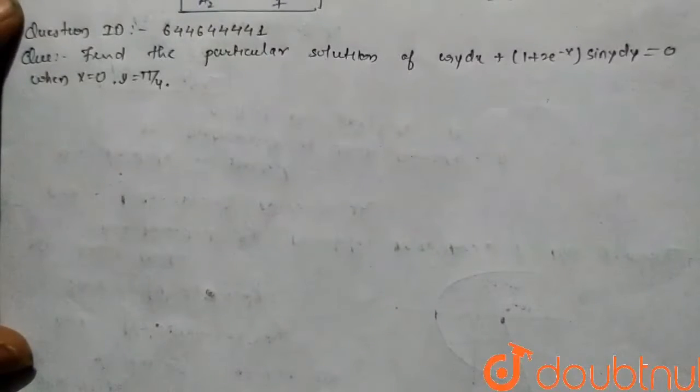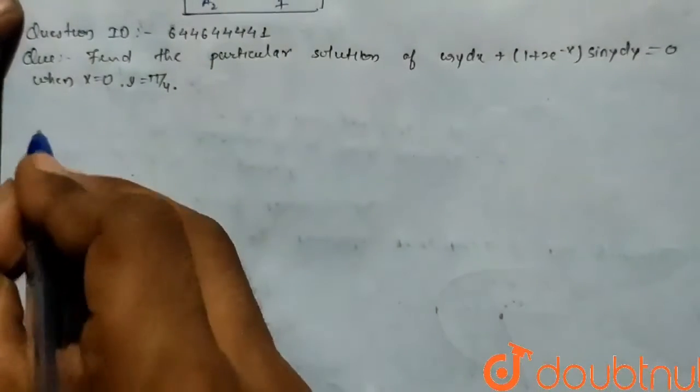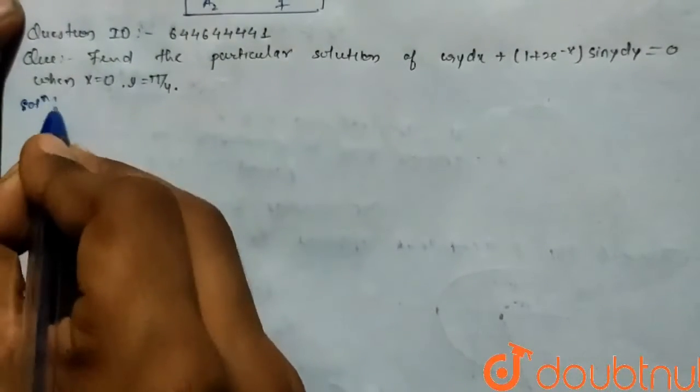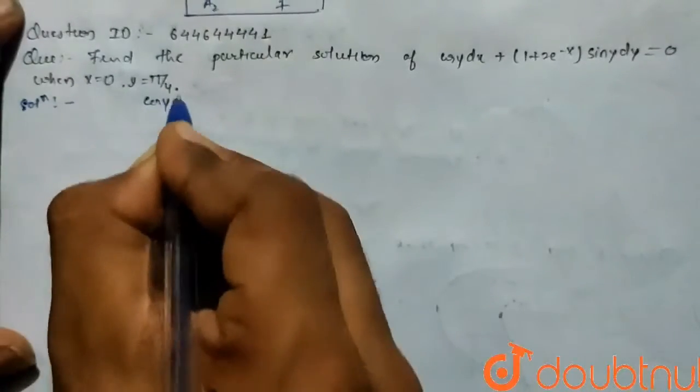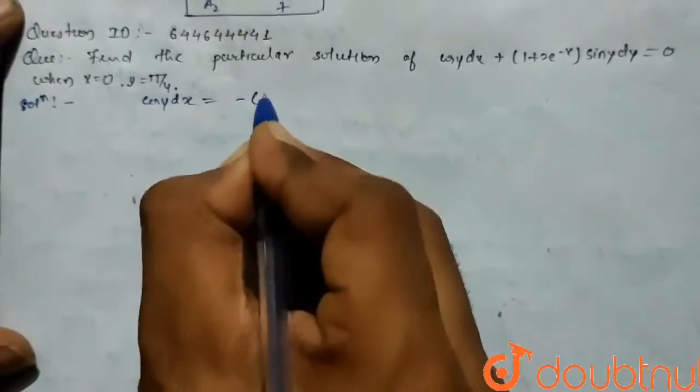Everyone, in this question find the particular solution of cos y dx plus 1 plus 2 e to the power minus x sin y dy is equal to 0, when x is equal to 0, y is equal to pi by 4.